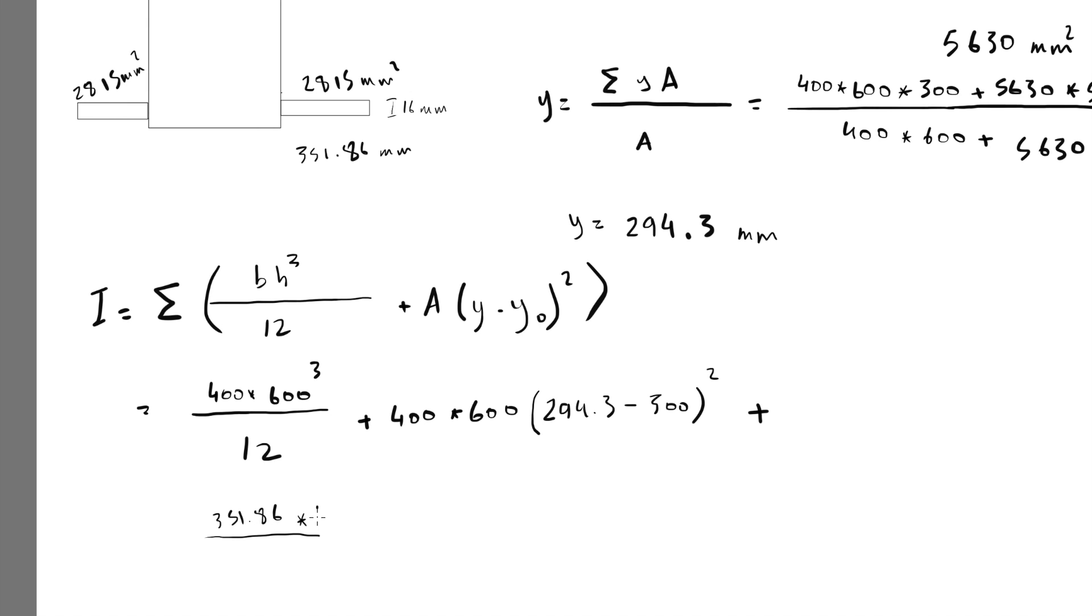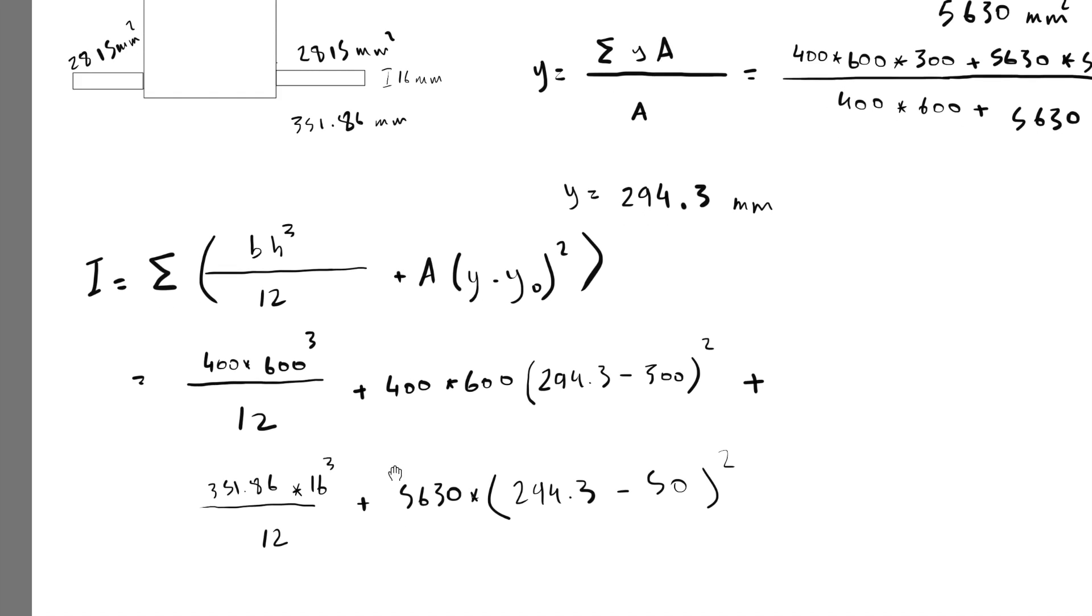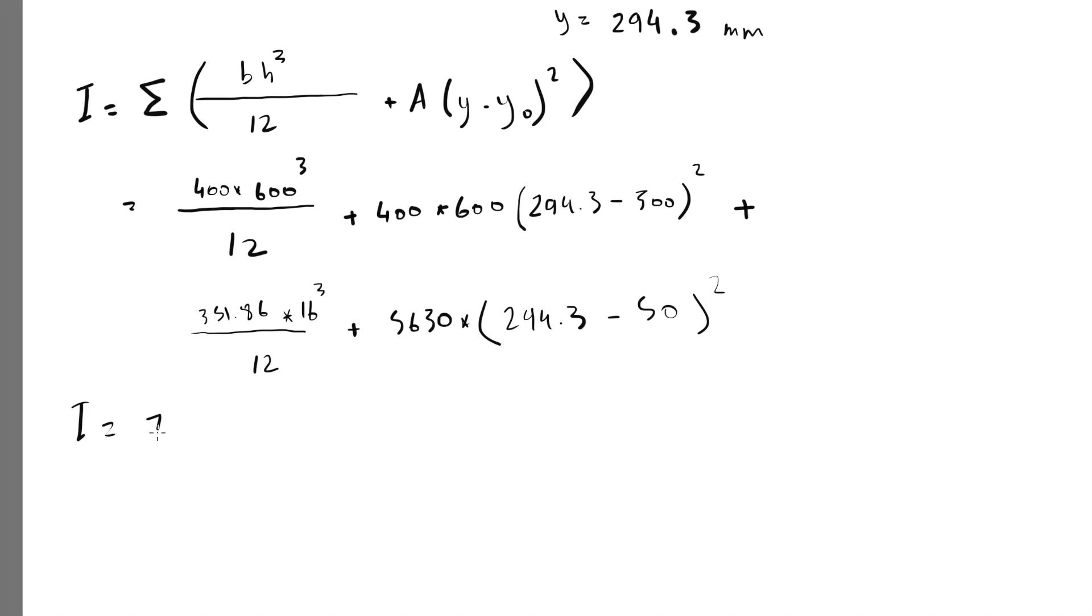Coming back to the equation of second moment of area, the b for that shape now is 351.86 multiplied by h which is 16³ divided by 12, plus area 5,630 multiplied by (294.3 minus the distance to the center of the rebars which is 50), all squared. Finally, I equals to 7.544 × 10⁹ mm⁴.